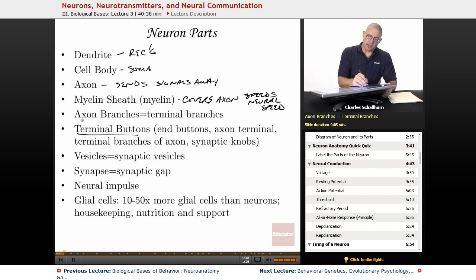There are these things called axon branches. Sometimes they're called terminal branches. There are terminal buttons, sometimes called end buttons, axon terminals, terminal branches of axons, synaptic knobs. As you read more into this, it's going to get easier to start putting all these words together in terms of dendrite, cell body, axon, axon terminal, et cetera.